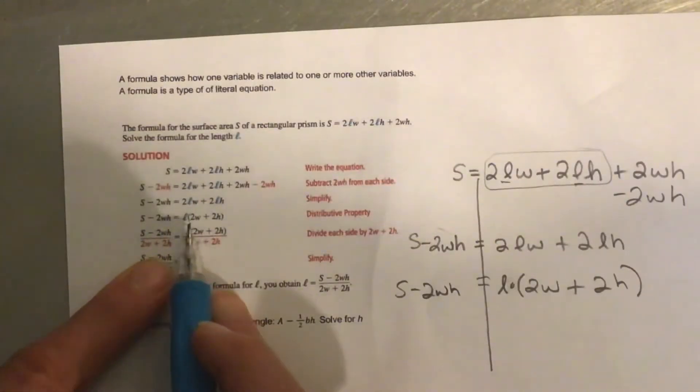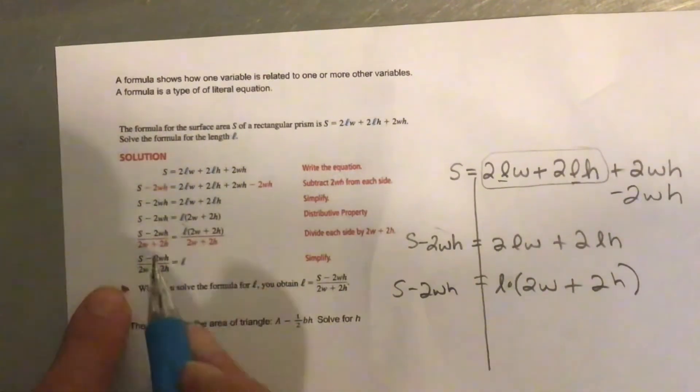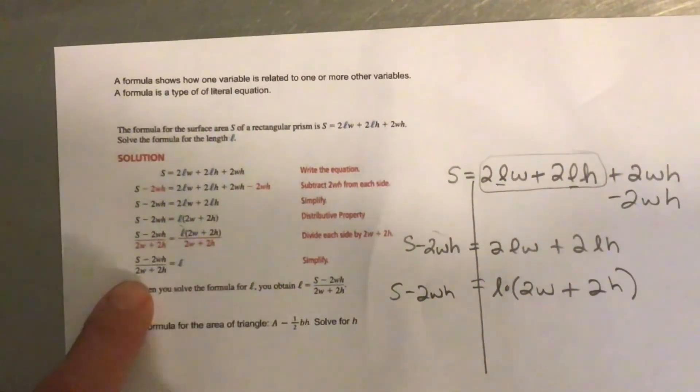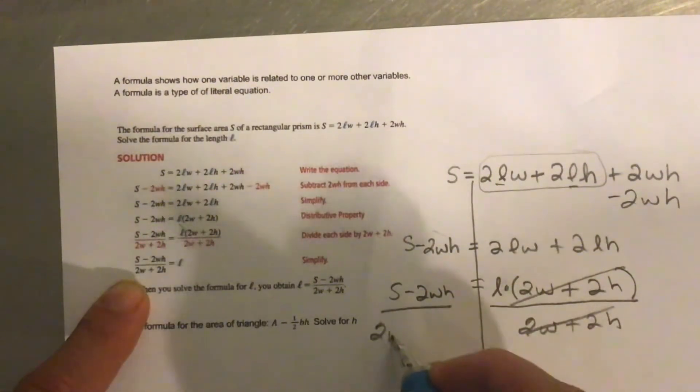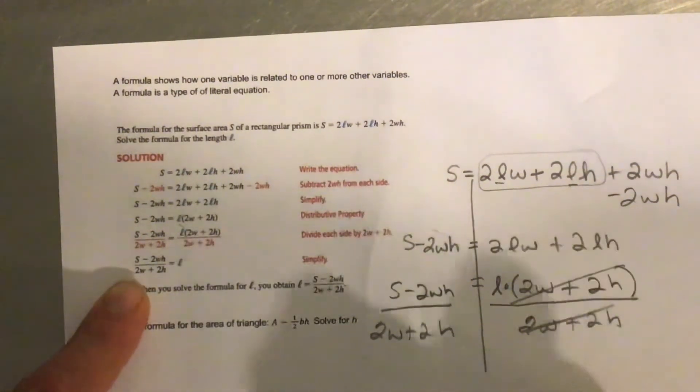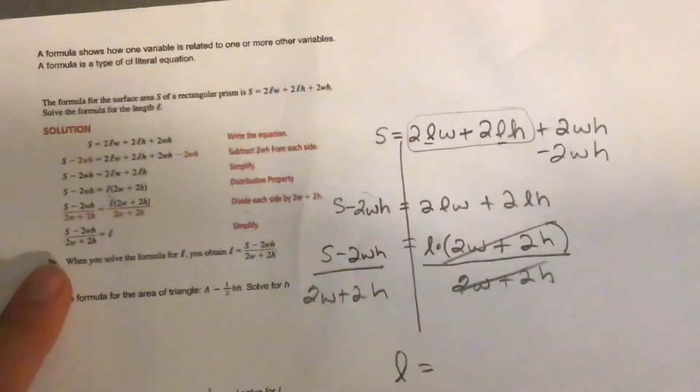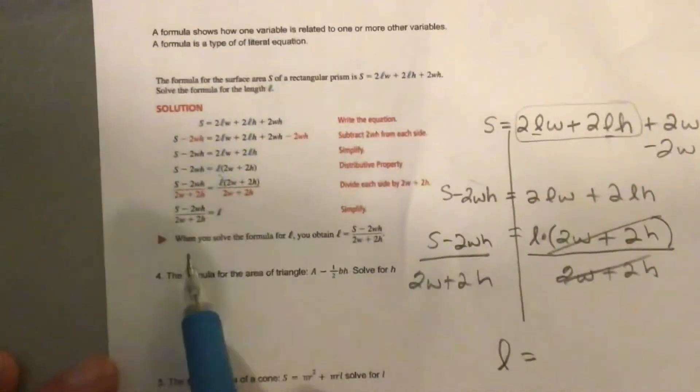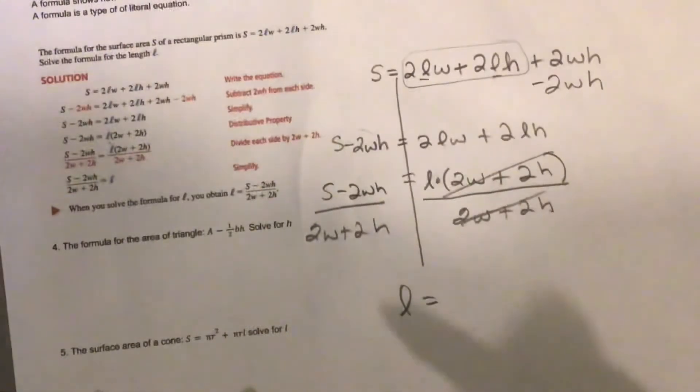And since that's multiplying, so ready? So since that's multiplying, we divide everything in the parentheses. And what you do to one side, you do to the other. So I'll do that here. Again, if I'm going too slow, speed up. If I'm going too fast, slow down. 2W plus 2H. So my length is just like what they said there. And the reason you might want to do this is maybe you know all of the other measurements, but the length.